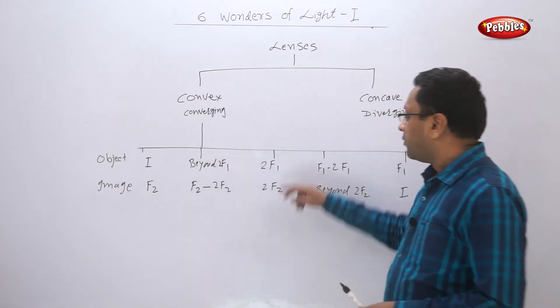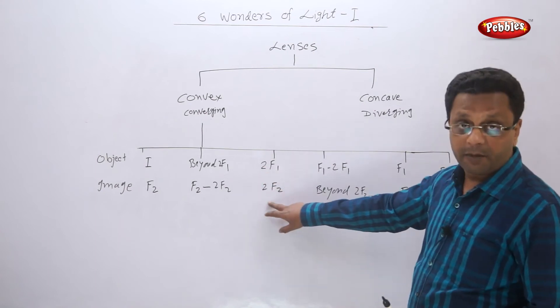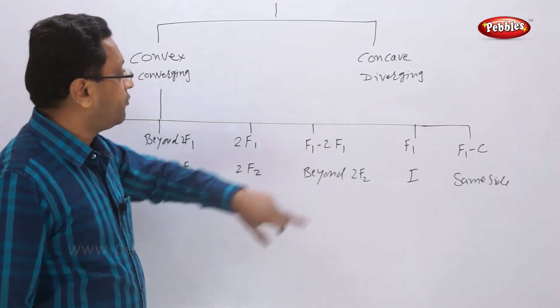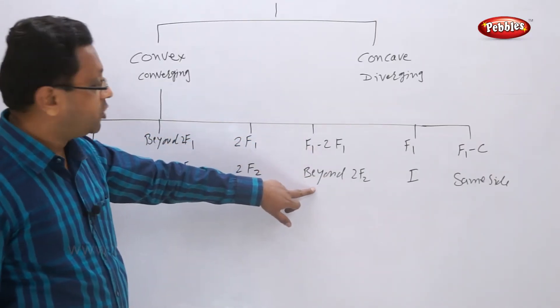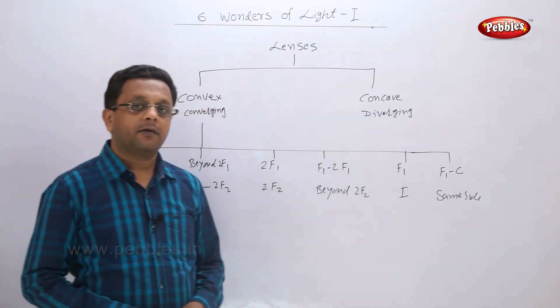Whenever the object is at 2F1, you get the image at 2F2. If the object is placed between F1 and 2F1, then you will get the image beyond 2F2. If the object is at F1, then the image will be at infinity.